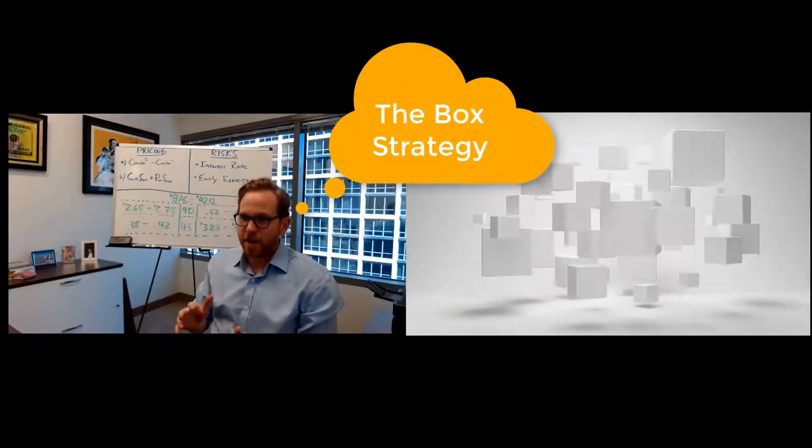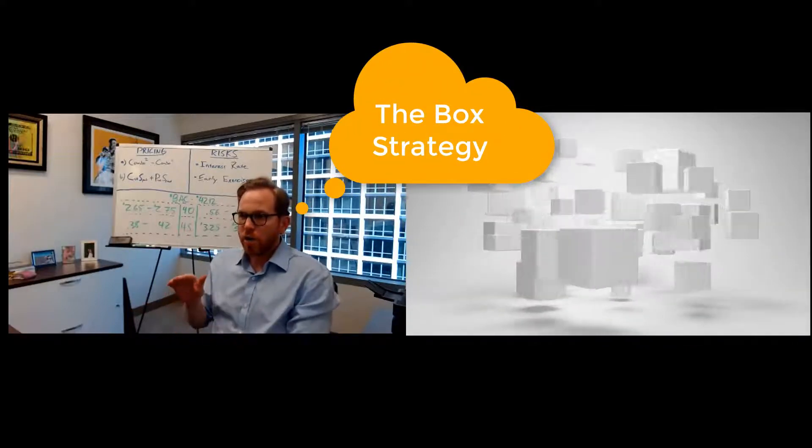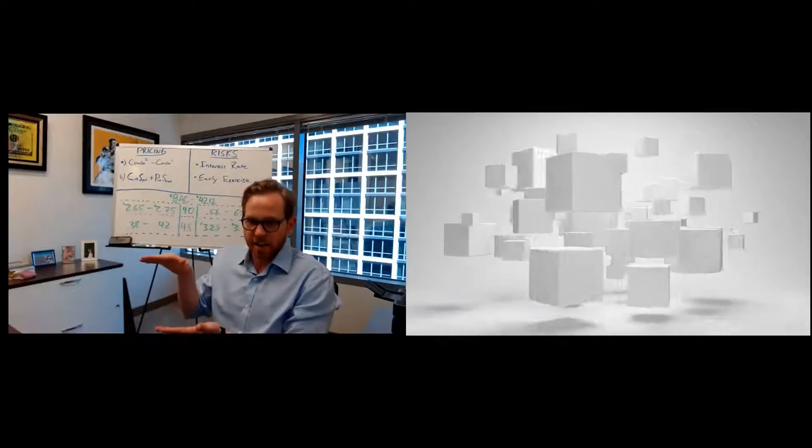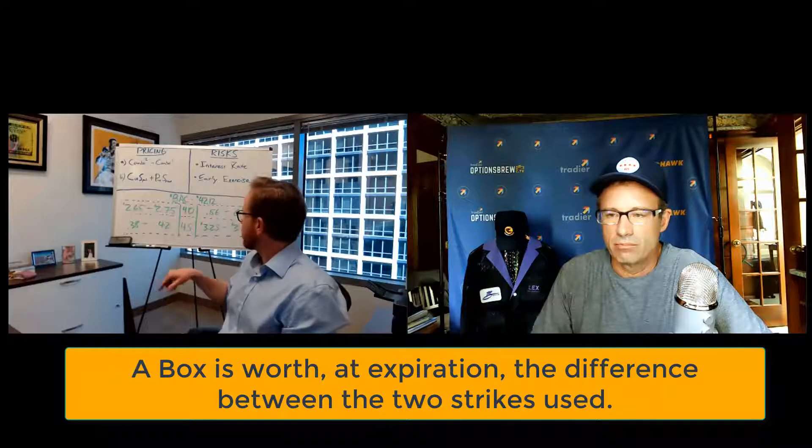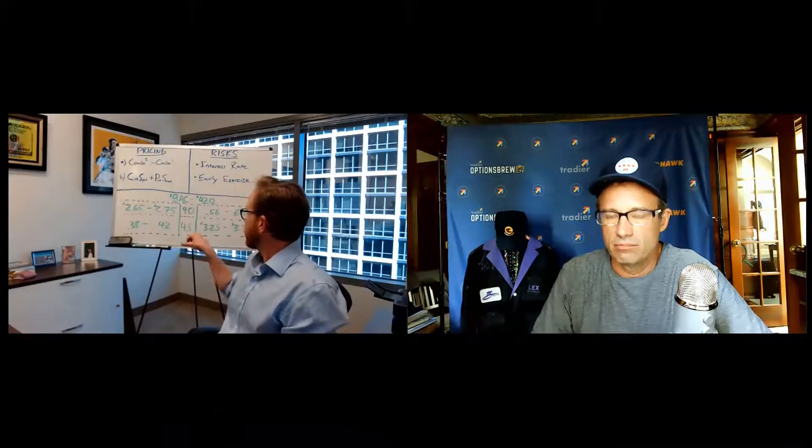The box strategy fundamentally comes down to buying stock on one line and selling stock on another line. That value of the box is going to be the difference between those two strikes. Looking at Bank of America, with the 40 strike and the 45 strike, that value is always going to be five dollars — a 10-dollar box is the 30 to 40 strike, a 20-dollar box has a 20-dollar strike difference.